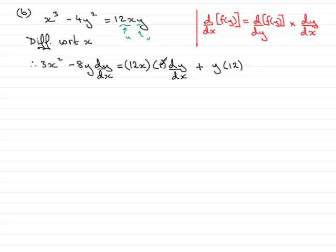So basically I've differentiated with respect to x, but I now need to find dy dx. So tidying this up, adding the 8y dy dx to both sides and subtracting the 12y from both sides, what I get is 3x squared minus 12y equals 12x dy dx plus 8y dy dx.